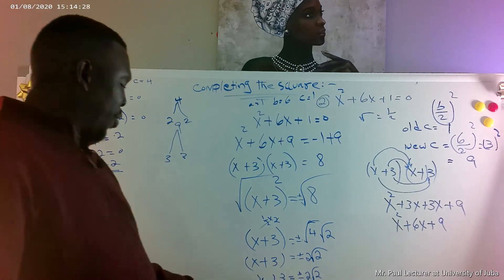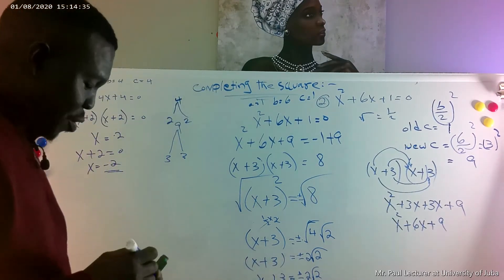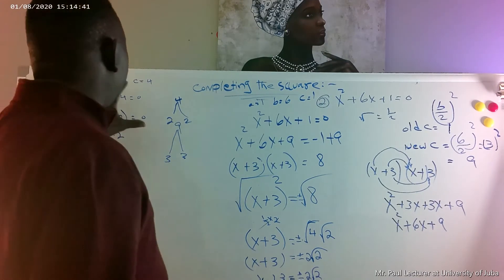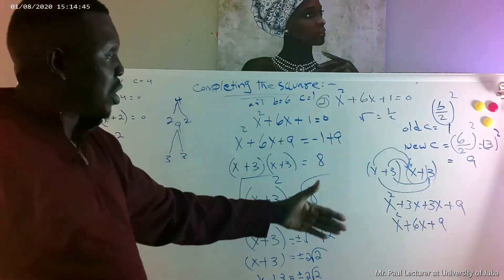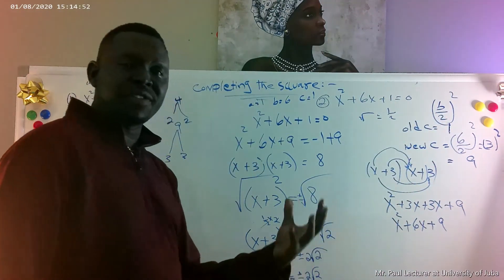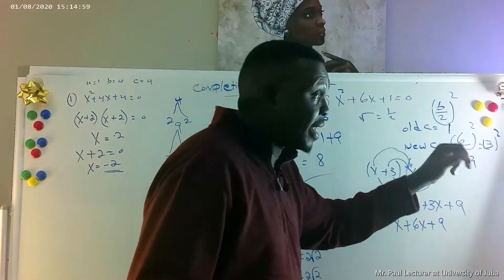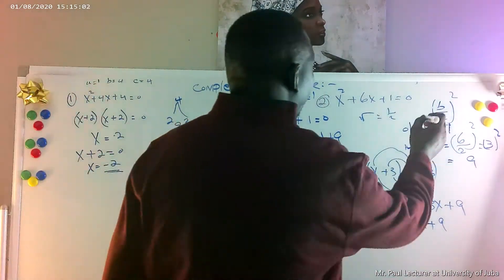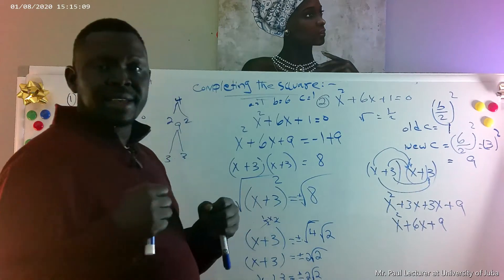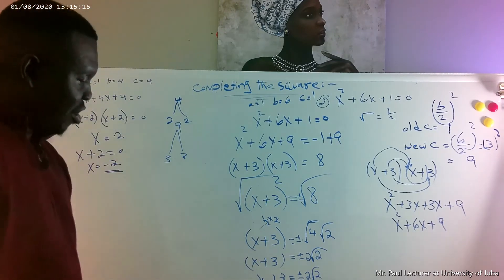Those are the two answers from completing the square — one with the positive and one with the negative. Remember the key formula: the new c equals (b divided by 2) squared. That is how you get the new c — it doesn't come from nowhere. And the two numbers, 3 and 3, when multiplied give c and when added give b.